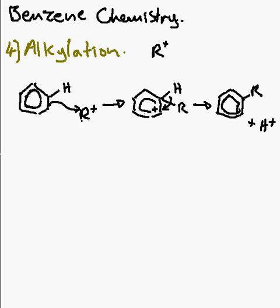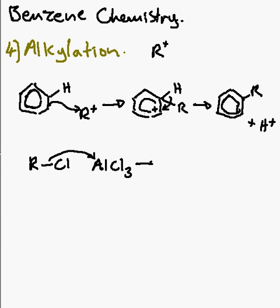The other thing we need to consider is how you actually get the R⁺, which is where it tends to divide more confident students from less confident ones, because it's a little bit difficult. You need an R group attached to a Cl, and something to take the Cl off. So we use AlCl₃, which is the Friedel-Crafts reagent. If you haven't been taught this, don't worry, just be aware of the top mechanism. But if you have, it's good revision, as this reagent is also used in the next step: acetylation.